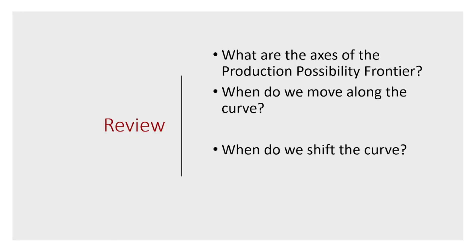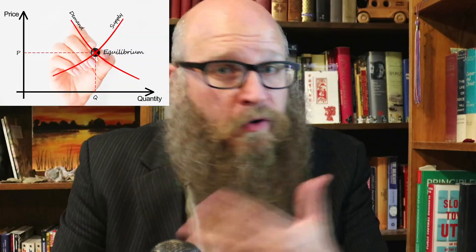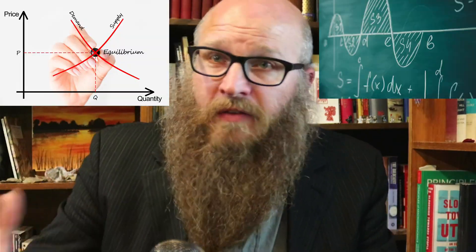So to review, what are the axes of the production possibility frontier? We're going to have two goods. We can do two different things. We can either produce pizza, we could produce salad. We can expand this to be what you spend your time doing. Are you going to spend the next hour studying economics? Or are you going to spend the next hour studying calculus?